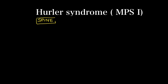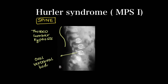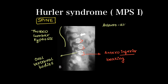Coming to the X-ray of the dorsolumbar spine, there will be curvature defects like thoracolumbar kyphosis. There are bulbous, oval-shaped vertebral bodies with pointing of the antero-inferior part of the vertebral body, called antero-inferior beaking — pathognomonic for this disease. In the cervical spine, there will also be atlanto-axial instability.